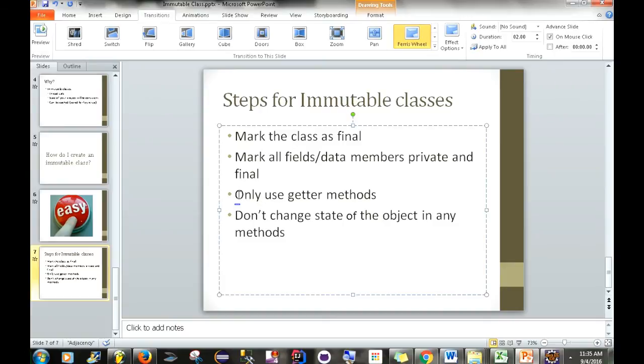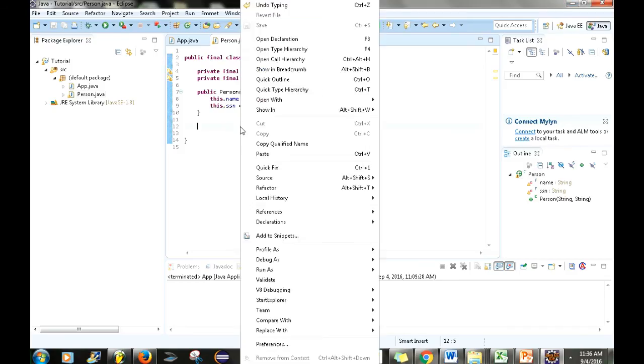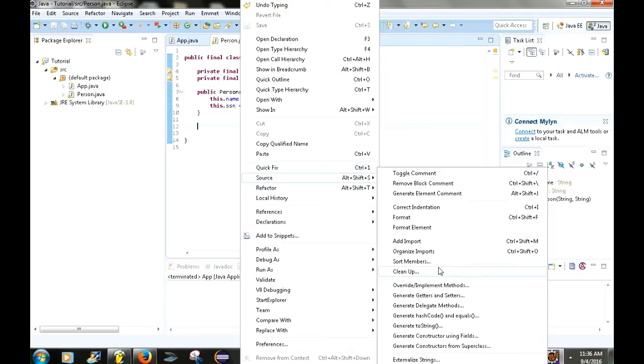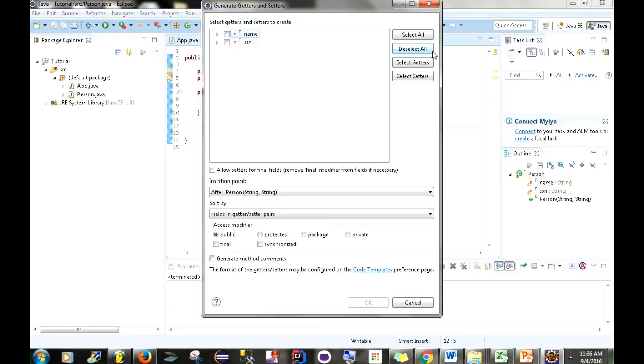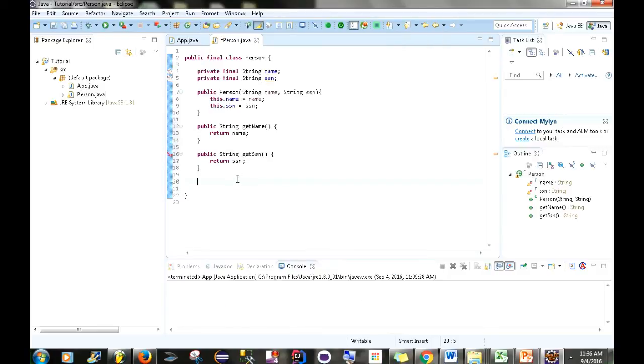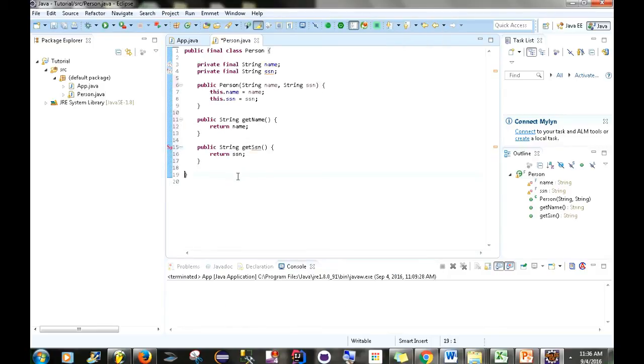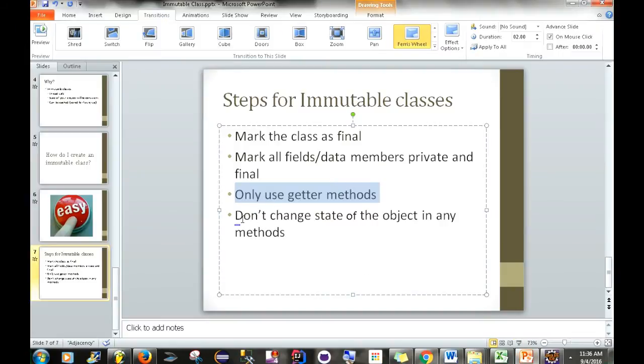All right. So, the next thing we want to do is only use getter methods. So, we're going to do that right now. We're going to right click. Go to source. And then generate getters and setters. And then select getters. Go to okay. All right. So, I think that's pretty much it.